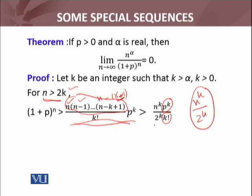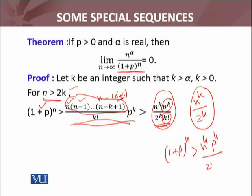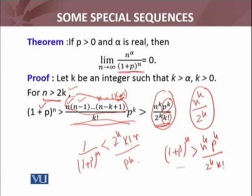So the expression (1+p)^n > n^k · p^k / (2^k · k!). Taking the reciprocal of this inequality (which reverses the inequality sign), we get: 1/(1+p)^n < (2^k · k!) / (p^k · n^k), i.e., 1/(1+p)^n < 2^k · k! · n^(−k) / p^k. I will use this inequality to decide about the convergence of the sequence n^α/(1+p)^n.